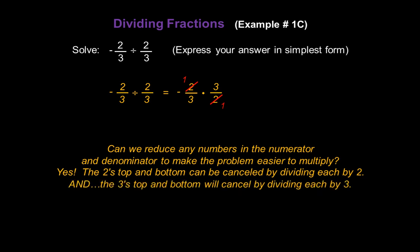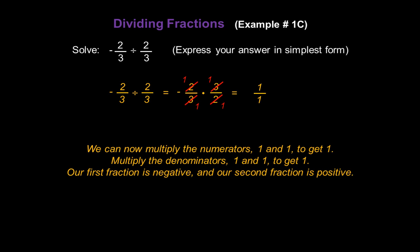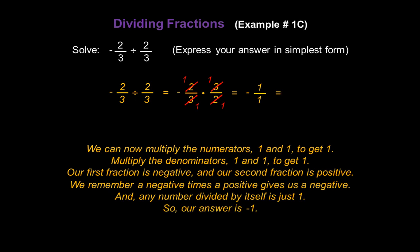And the 3s top and bottom cancel by dividing each by 3 — they also become 1s. Now we multiply the numerators: 1 times 1 gives us 1. The denominators: 1 times 1 gives us 1. But we're not done — we have to figure out the sign. Our first fraction is negative and the second is positive, so a negative times a positive gives us a negative. The answer is negative 1 over 1, and any number divided by itself is 1, so our final answer is negative 1.